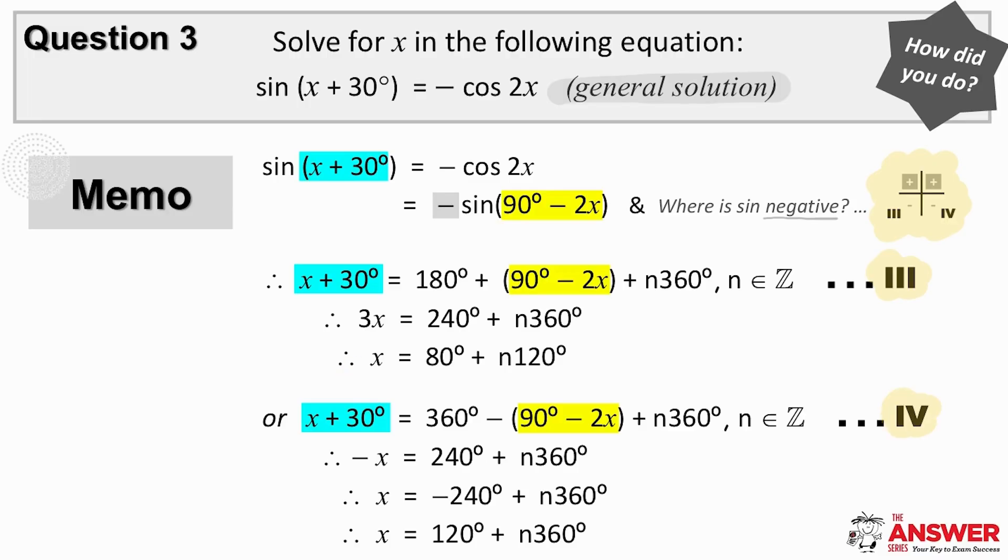And our fourth quad solution is x plus 30 equaling 360 minus the reference angle and also plus n360, n an element of Z. And this simplified gives us the other general solution for x of 120 plus n360. These two equations represent all the possible solutions of x for the above equation.